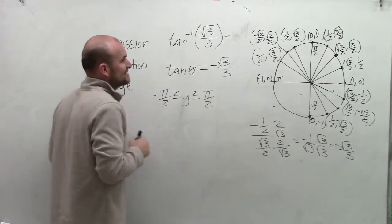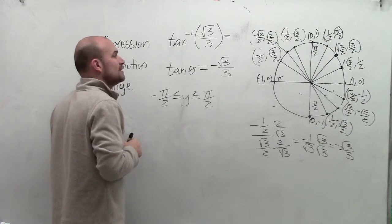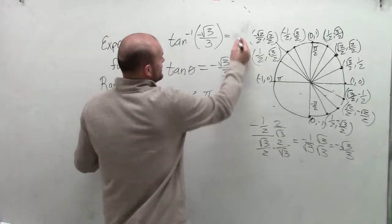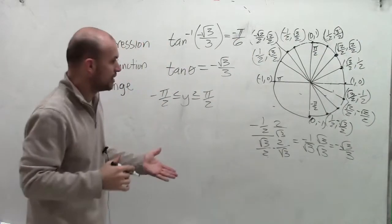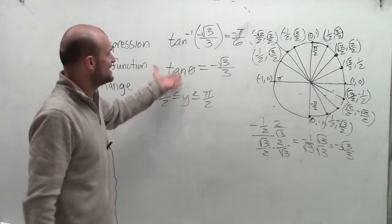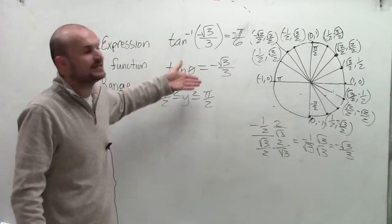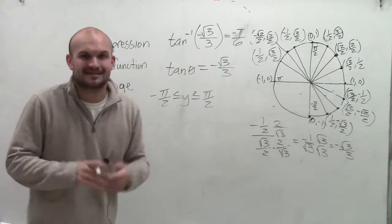Therefore, the inverse tangent of negative square root of 3 divided by 3 is equal to negative pi over 6. Or, saying it another way, tangent of negative pi over 6 is equal to negative square root of 3 divided by 3. Thanks.